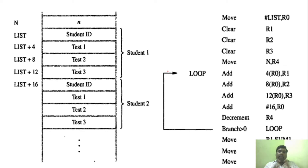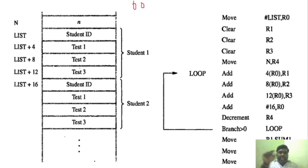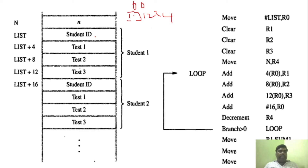To understand why index addressing is needed, consider a list of students. For example, 60 students are there — that is the number of students in the class. Each student has a student ID and some ID number. Each and every student has 3 subjects with test marks: test 1, test 2, and test 3.